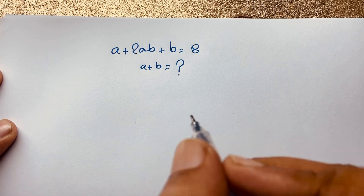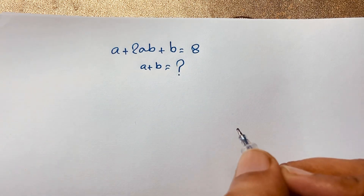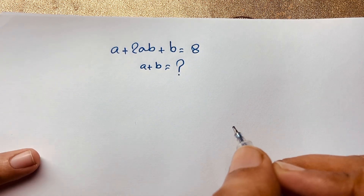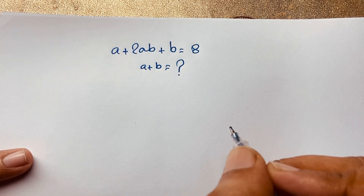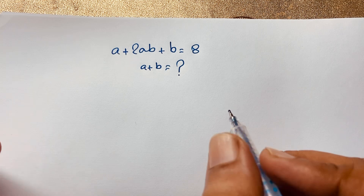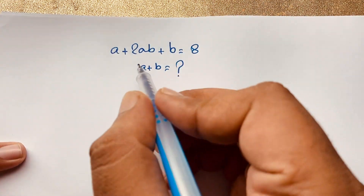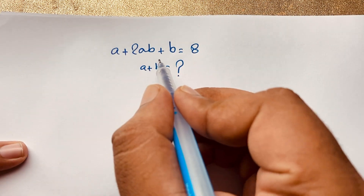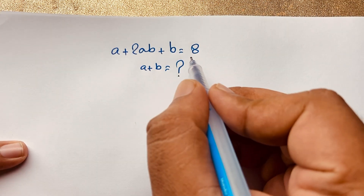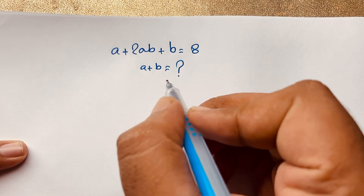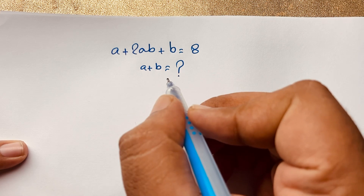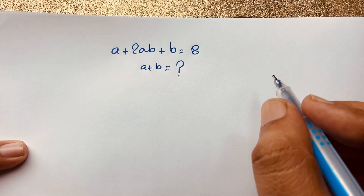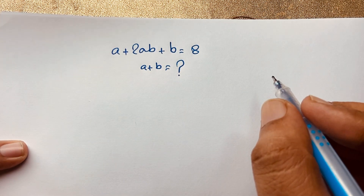Hello everyone. Welcome to Russia's Classroom. Today we have solved a nice algebraic maths Olympiad question. This question is: A plus 2AB plus B is equal to 8. A plus B is equal to what? How to solve this interesting maths problem?